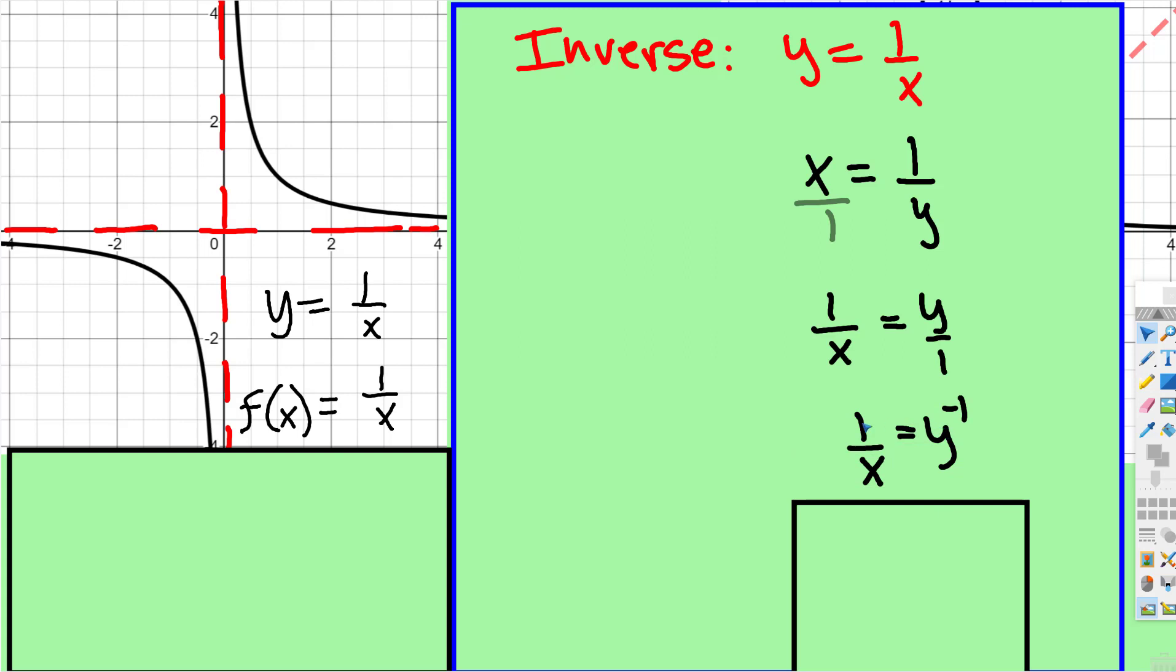So now look at what we have, y is equal to 1 over x, well that's the original function, y is equal to 1 over x. The inverse function and the original function are the same function, so the graphs are the exact same.